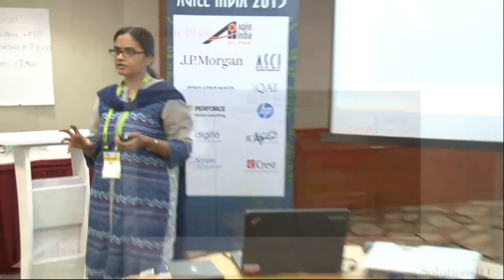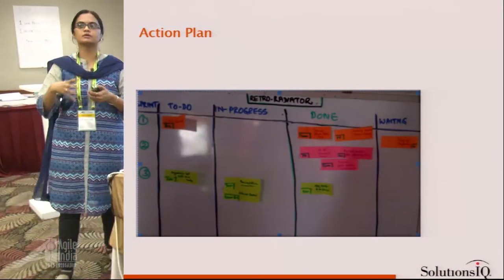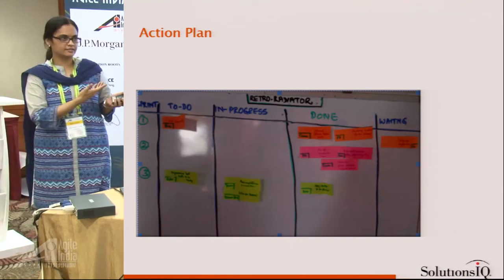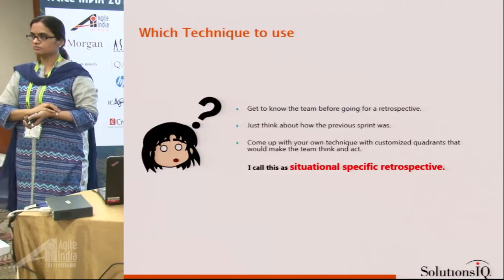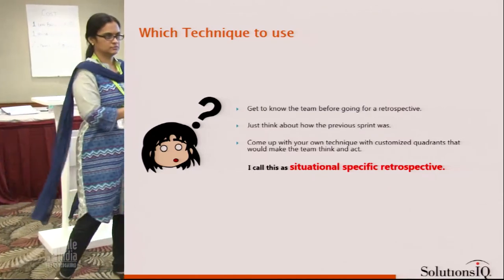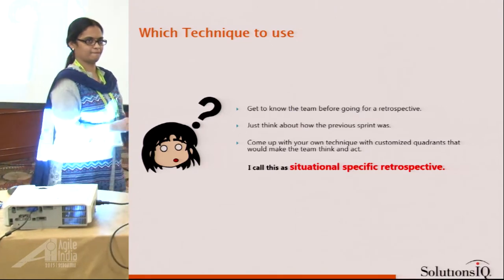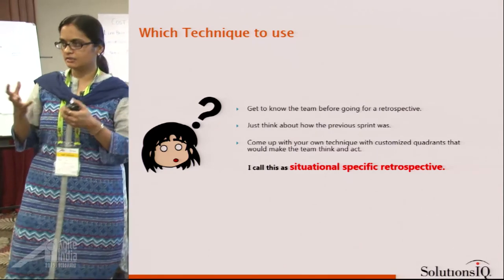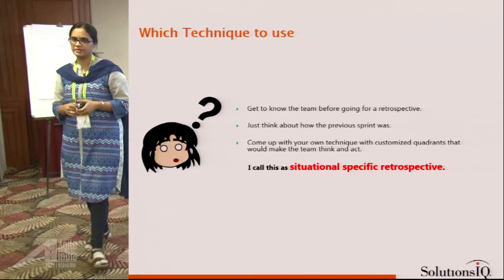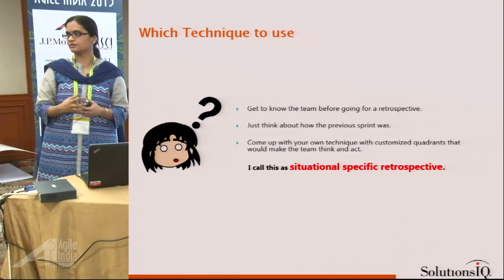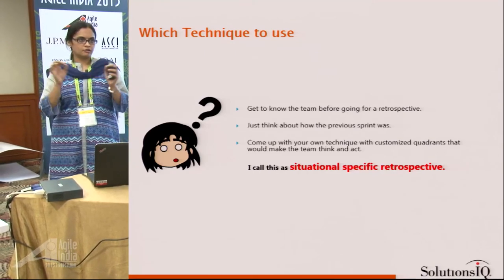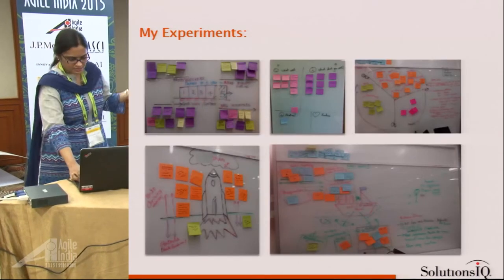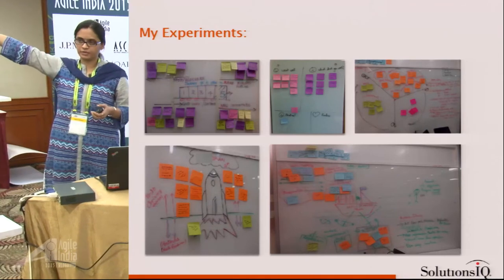The action plan is very important. At the end of a retrospective you really need to come up with an action plan on how you'll work on what was discussed. You can save the action plan in an Excel sheet or have a visual indicator — a radiator — in your team space. As for which technique to use: understand your team, understand the context, understand the background, look at the situation, then use an appropriate technique. There's no one-liner rule that says only this technique must be used.